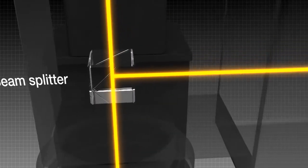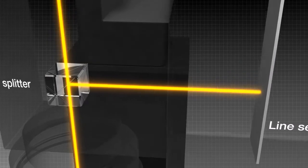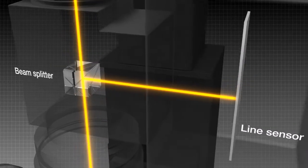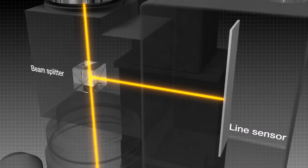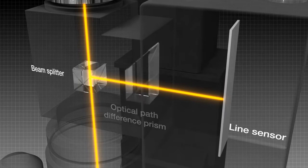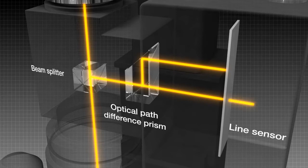At this point, the line sensor is only being fed one signal, so it cannot determine whether the focus point is high or low. An optical path difference prism is placed in front of the line sensor, and the line sensor now receives signals from two points.